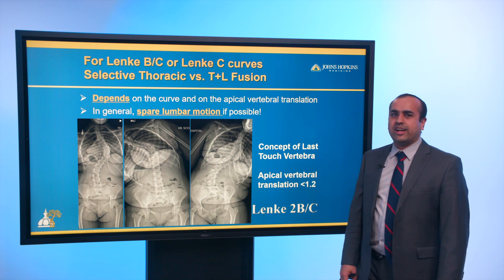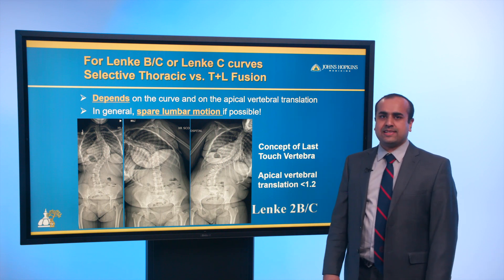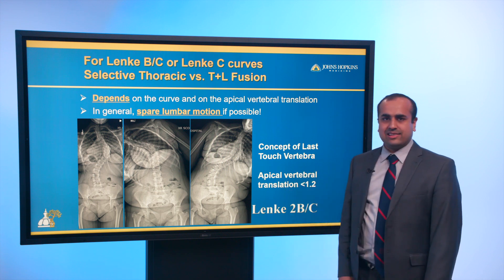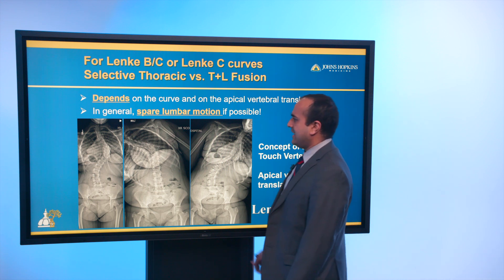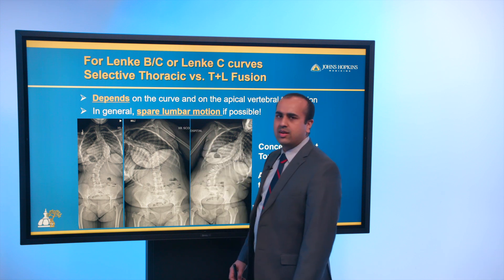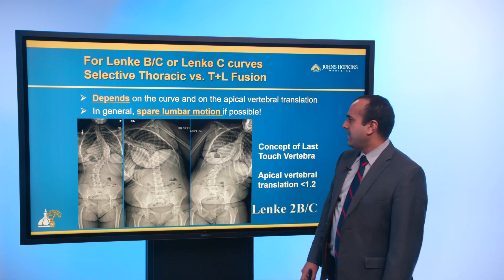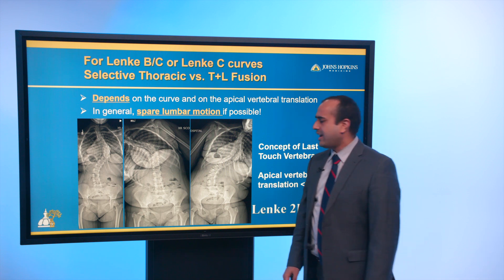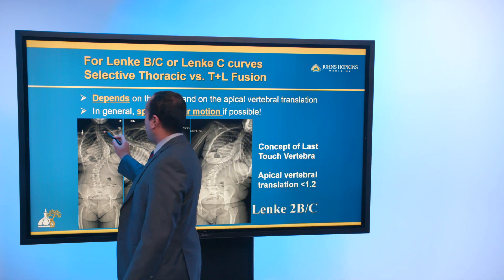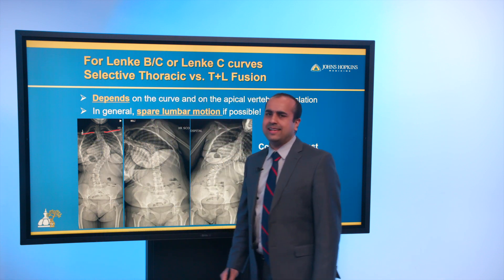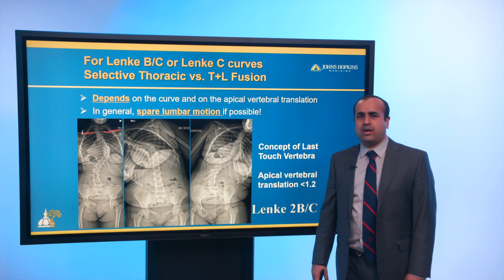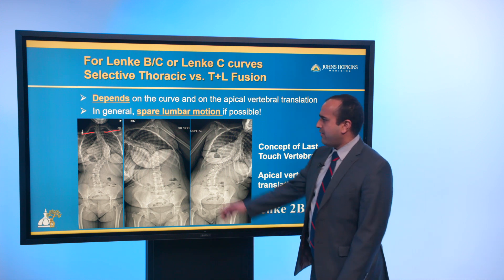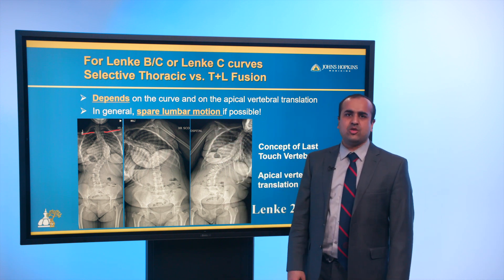The real question here is what levels do we fuse, because clearly this child is a surgical candidate. As far as the UIV is concerned, it's important to understand what the proximal thoracic curve is going to do. In this situation, the proximal thoracic curve doesn't really bend out on the benders. On top of that, her right shoulder is higher than her left, which tells me I need to go higher to control that shoulder. So in this case, I would prefer T2 or T3 as my UIV.